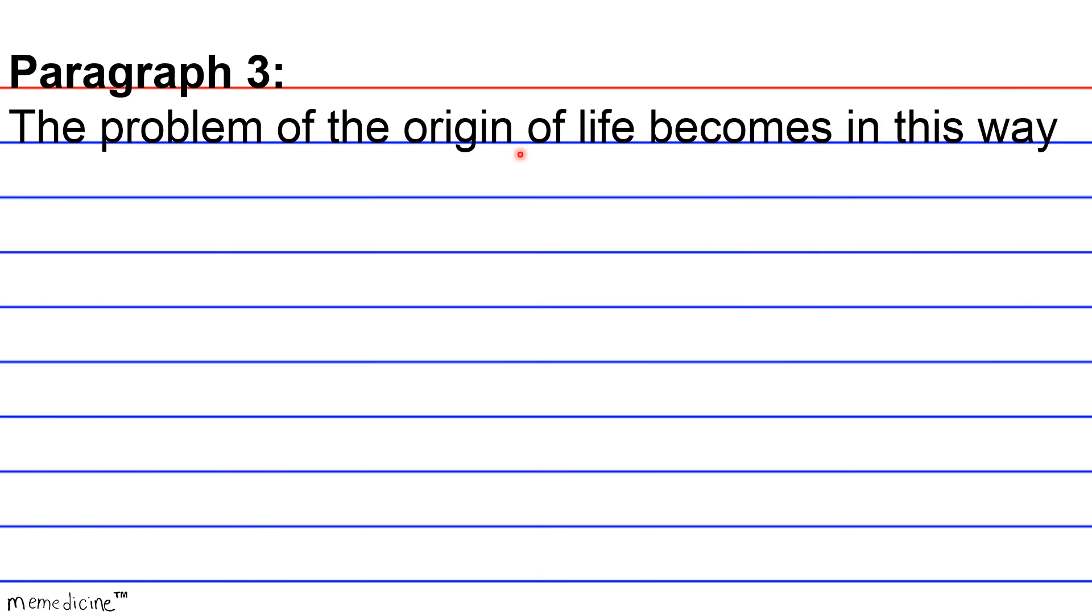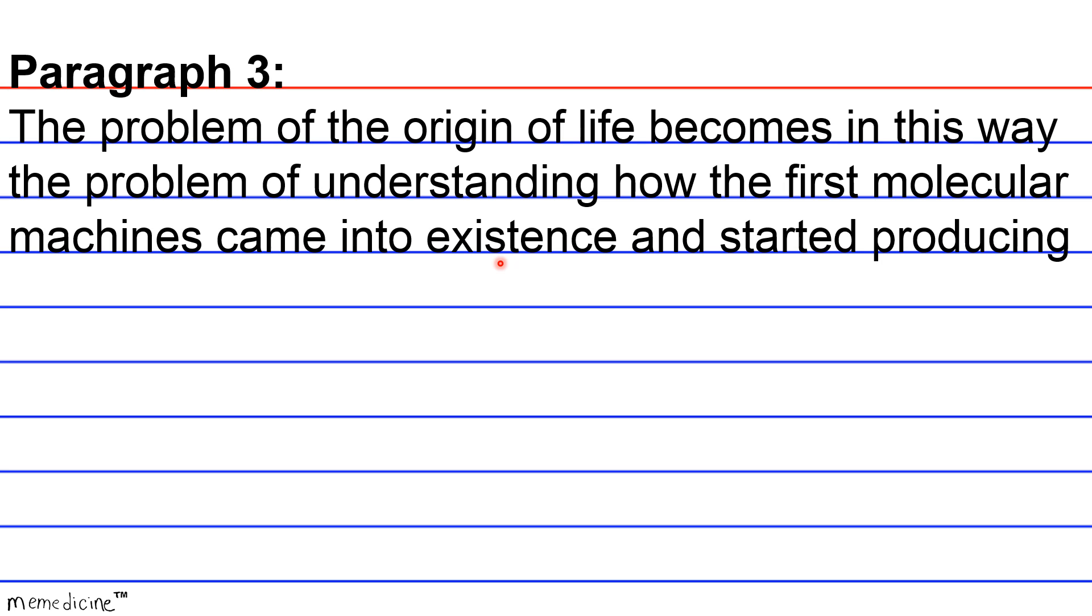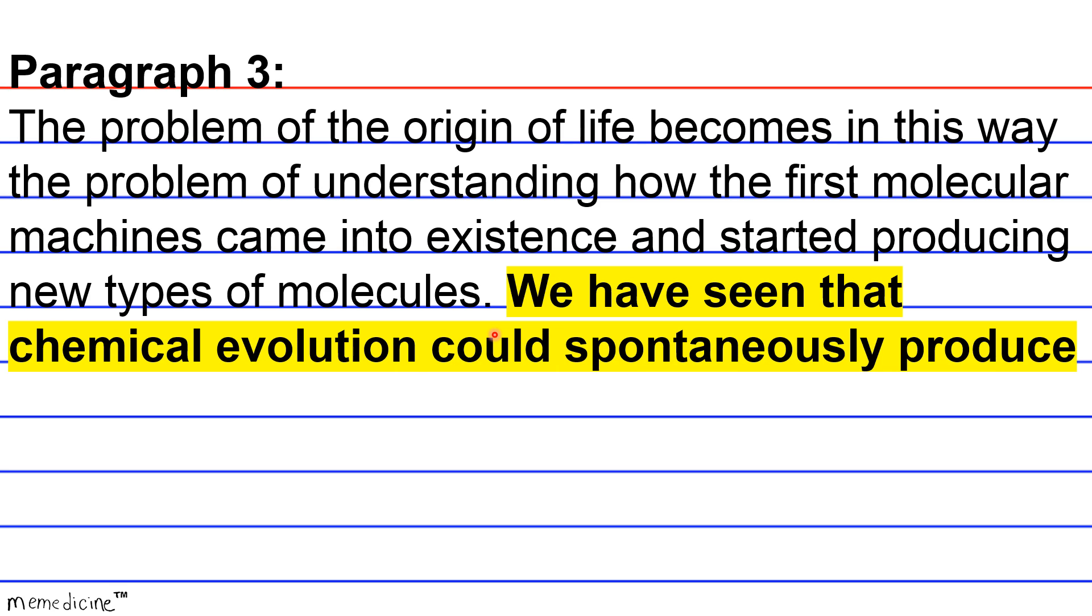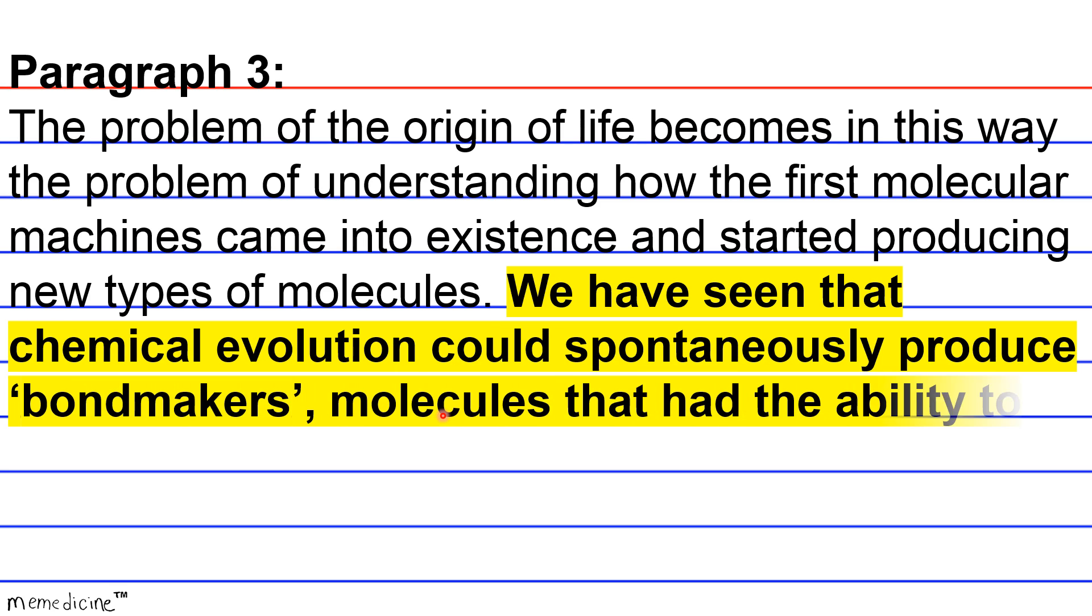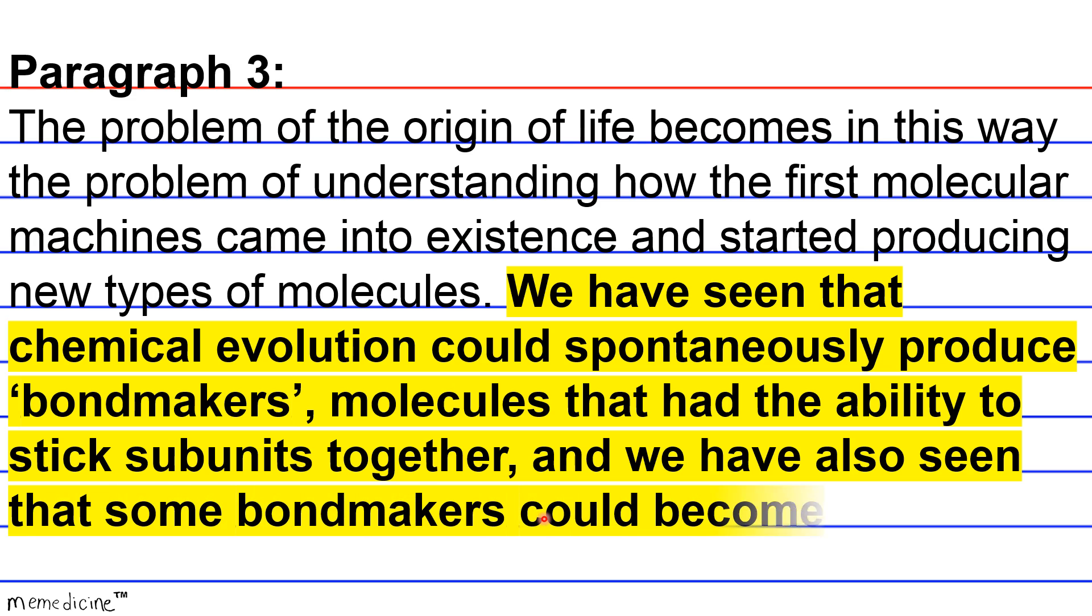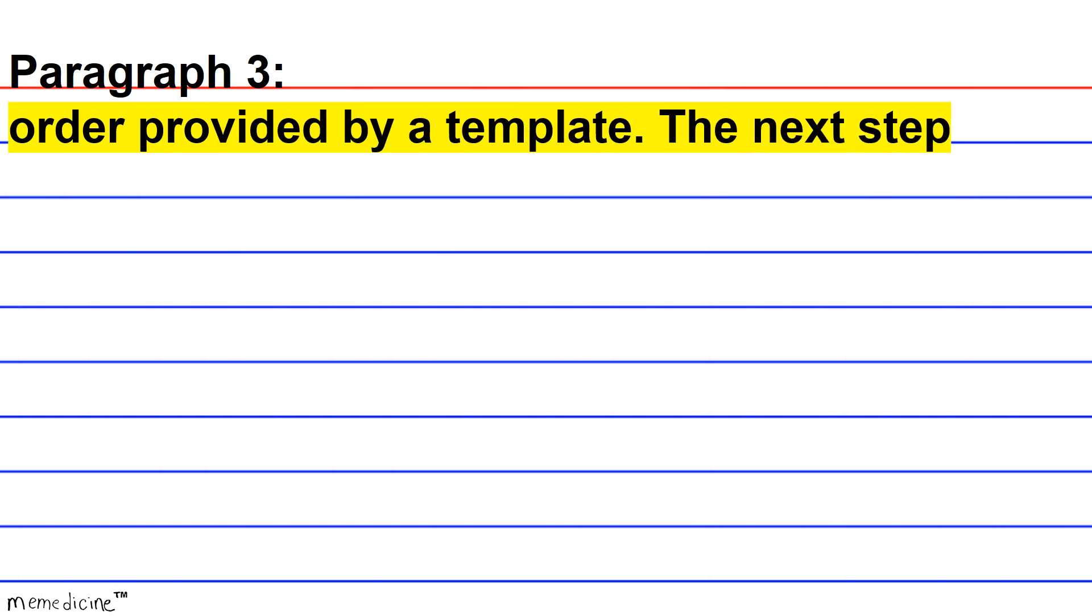Paragraph 3. The problem of the origin of life becomes, in this way, the problem of understanding how the first molecular machines came into existence and started producing new types of molecules. We have seen that chemical evolution could spontaneously produce bondmakers, molecules that had the ability to stick subunits together, and we have also seen that some bondmakers could become copymakers by sticking subunits together in the order provided by a template.